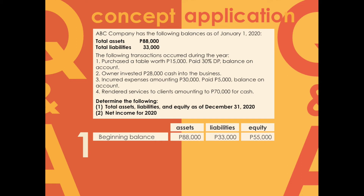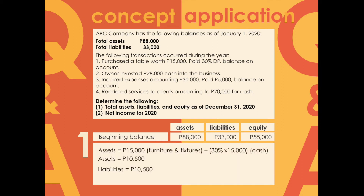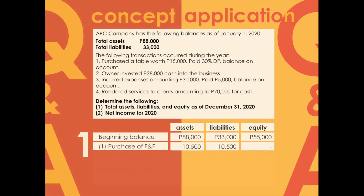Transaction one: purchased a table worth 15,000 pesos — paid 30% down payment, balance on account. Accounts affected are furniture and fixtures (asset), cash (asset), and accounts payable (liability). For assets: increase of 15,000 for furniture, less 30% cash payment of 4,500, giving a net increase of 10,500. Liabilities also increase by the unpaid balance of 10,500. No impact on equity.